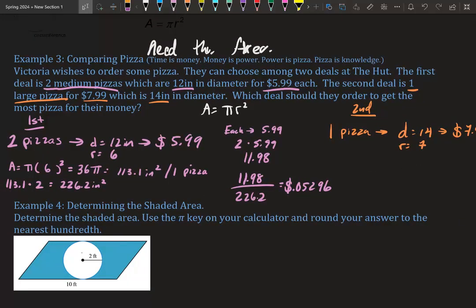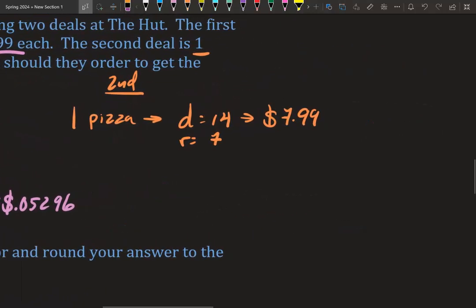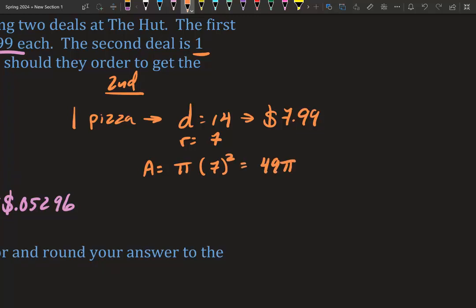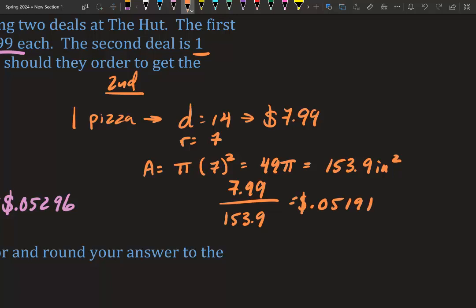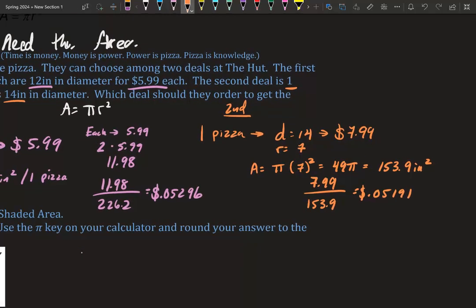For deal two: one pizza with radius 7, costing $7.99. Area = π × 7² = 49π ≈ 153.9 inches squared. We only buy one pizza, so cost per unit area = $7.99 ÷ 153.9 ≈ $0.0519 per square inch. The second deal is cheaper.